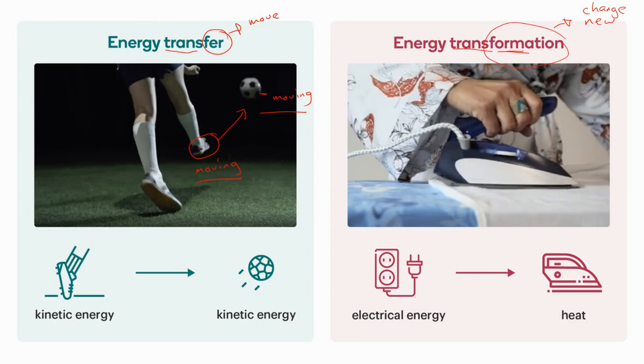For example, when we use an electrical device. The device changes electrical energy into a different form of energy. In this example, thermal energy. That's how we can summarize transfer and transformation.